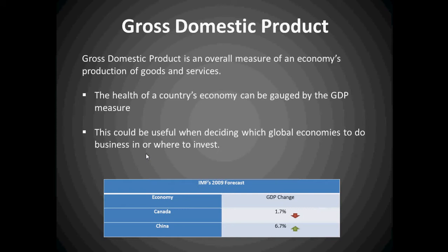GDP actually helps companies to make decisions and also helps individuals and households to make decisions on daily purchases. Gross domestic product is an overall measure of an economy's production of goods and services. It shows the health of an economy and how fast it's growing, and it is useful in decision making for global economies.